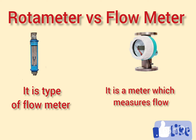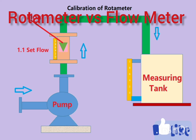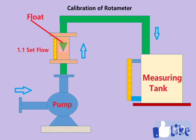This is the setup for calibration of rotameter. You can use any kind of pump - maybe a centrifugal pump or another kind of pump. We install the rotameter we want to calibrate on the discharge side of the pump, and we need a measuring tank to measure the amount of flow coming in.